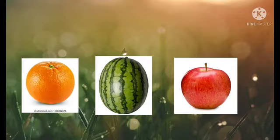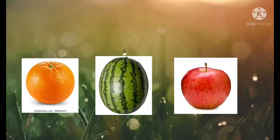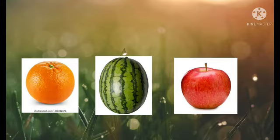Now let's see one more example. Here we have an orange, a watermelon, and an apple. Tell me, children, which fruit comes after watermelon? Yes, right — apple. Now tell me which fruit comes before watermelon? Yes, right — orange. Now tell me which fruit comes in between orange and apple? Yes — watermelon. Watermelon is in between orange and apple.